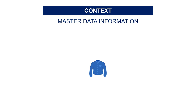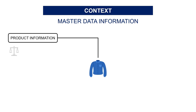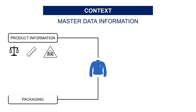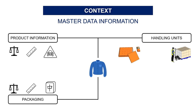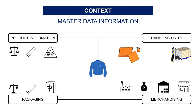During the creation process, master data specialists are entering product-related information into the ERP. You have product-related information like net weight, dimensions, or specific attributes like dangerous goods for instance. You also have packaging information like gross weight, product dimensions with packaging, or labeling language. You also add information related to handling units — how many pieces per box, how many boxes per pallet.